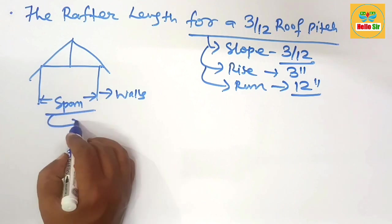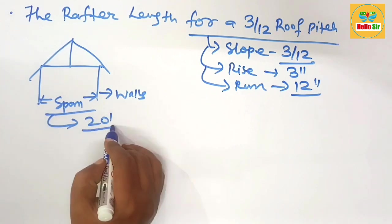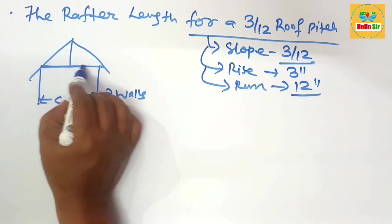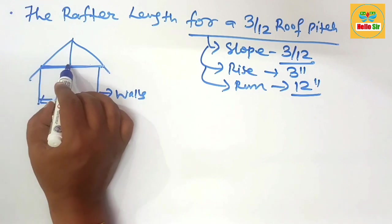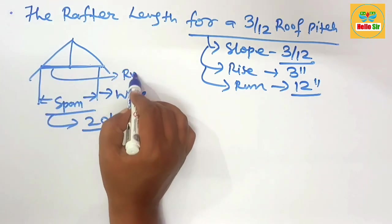The distance between two supporting walls is the span of the roof, which is about suppose 20 feet. Half the span is called the run.